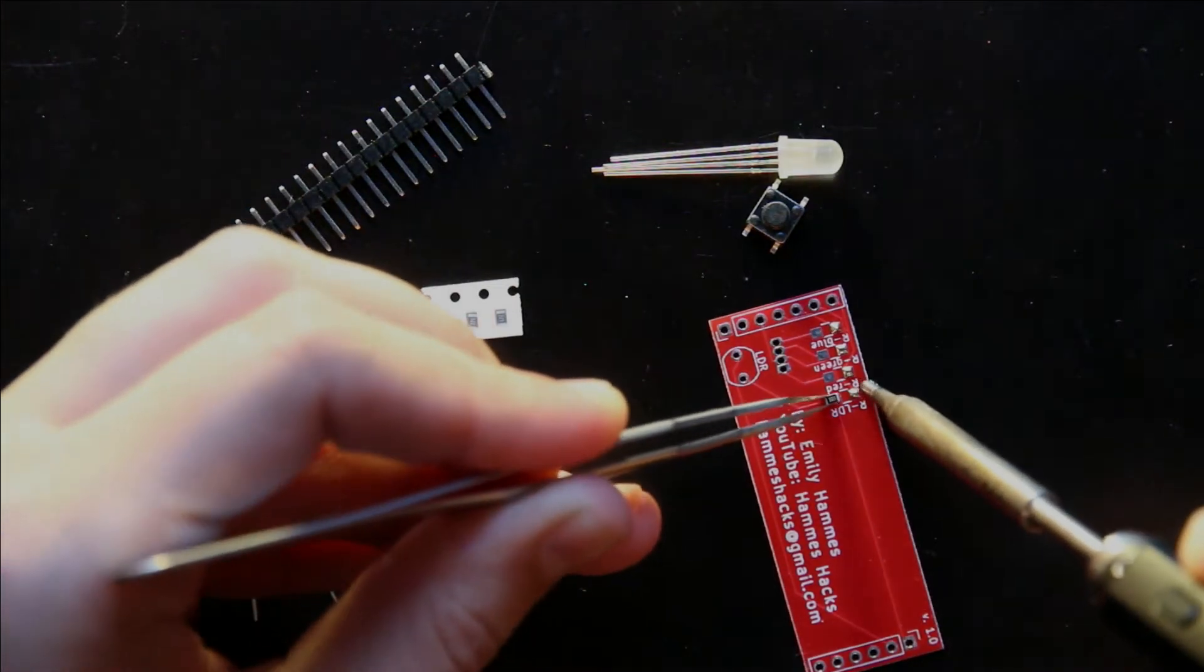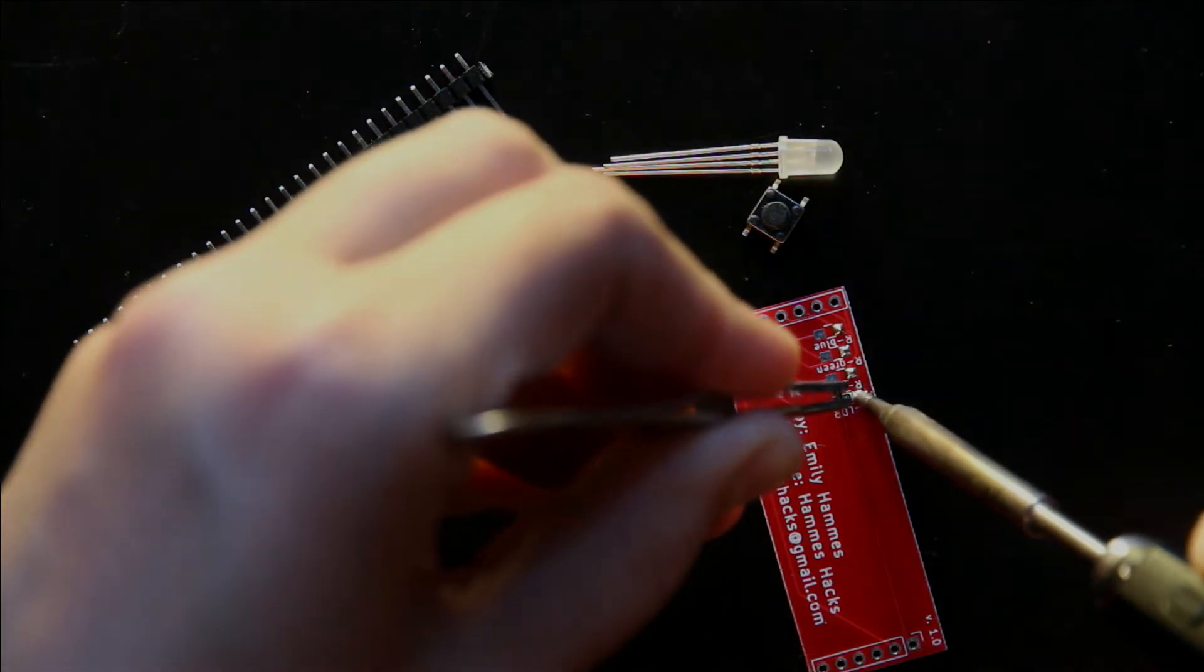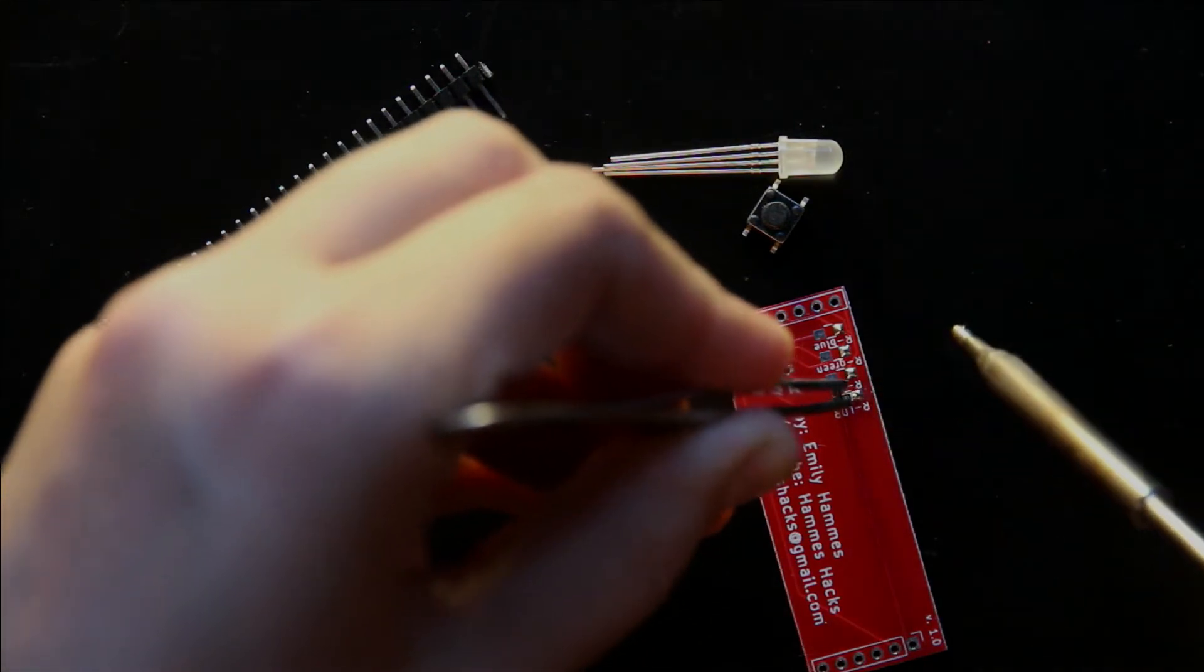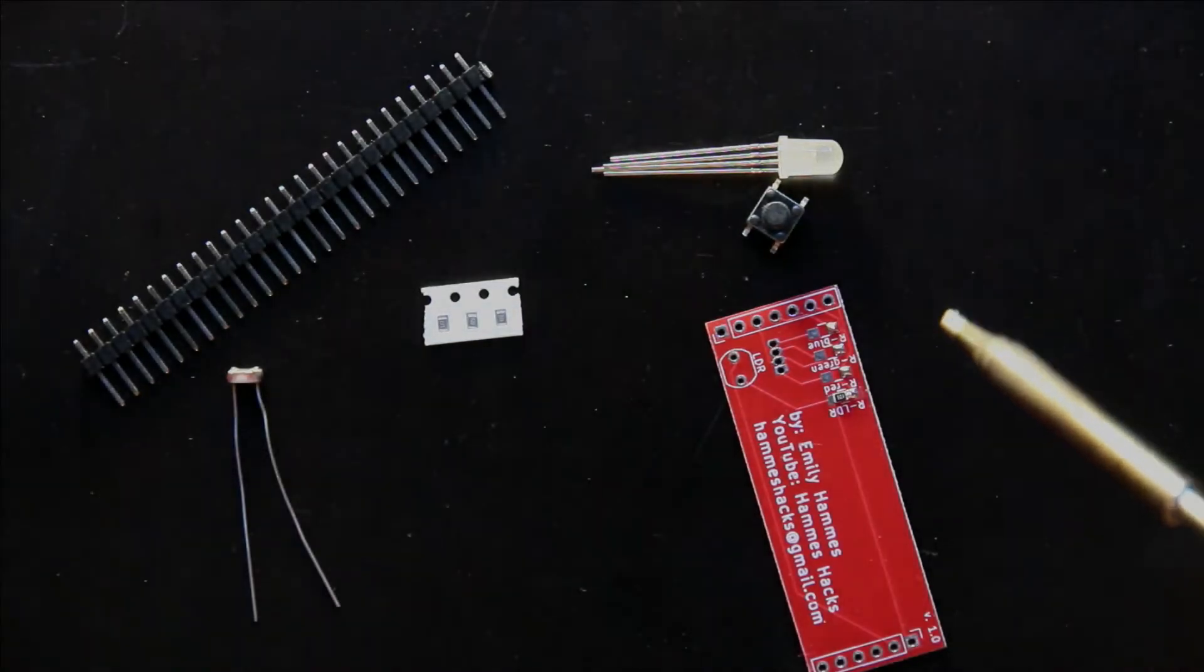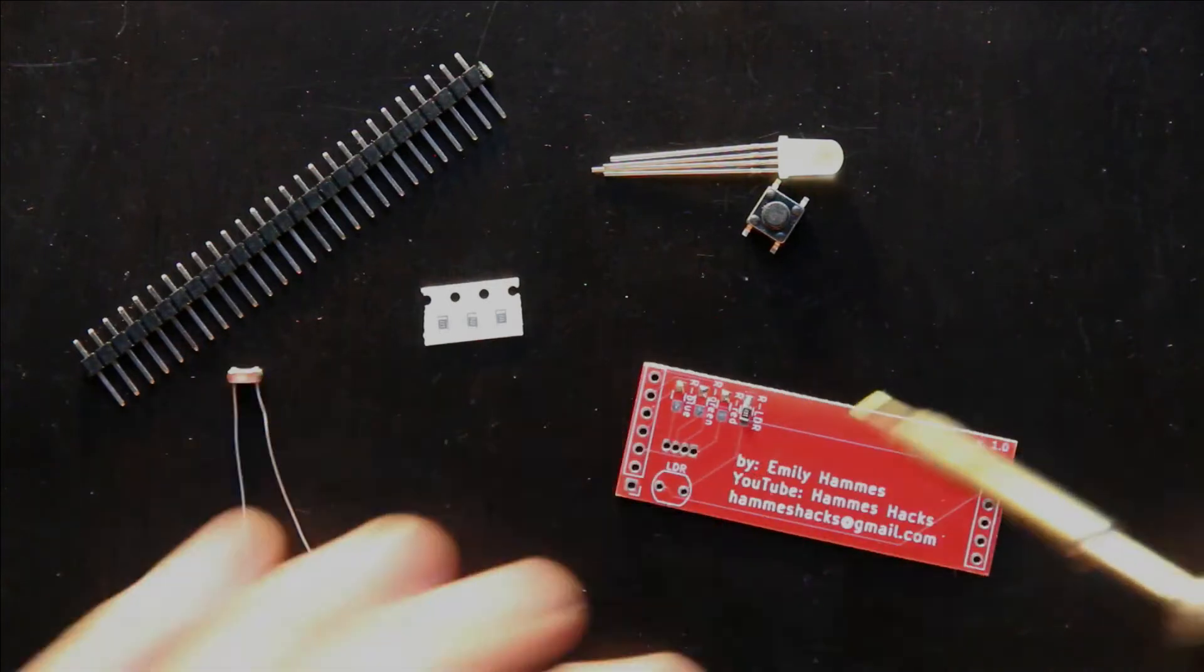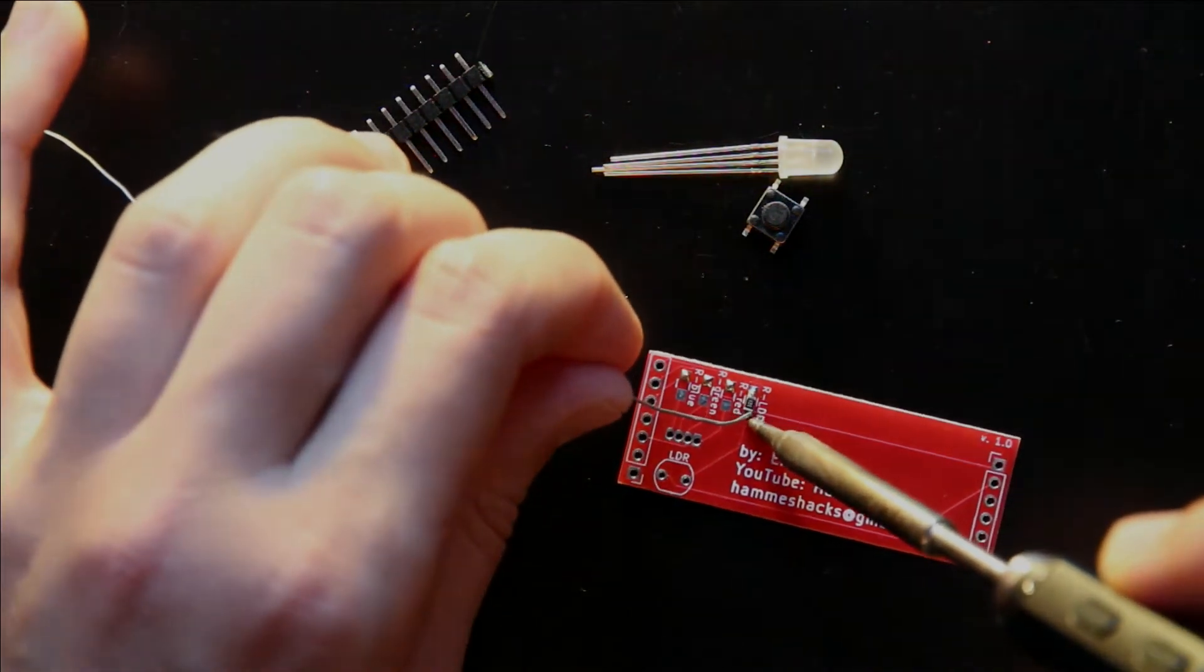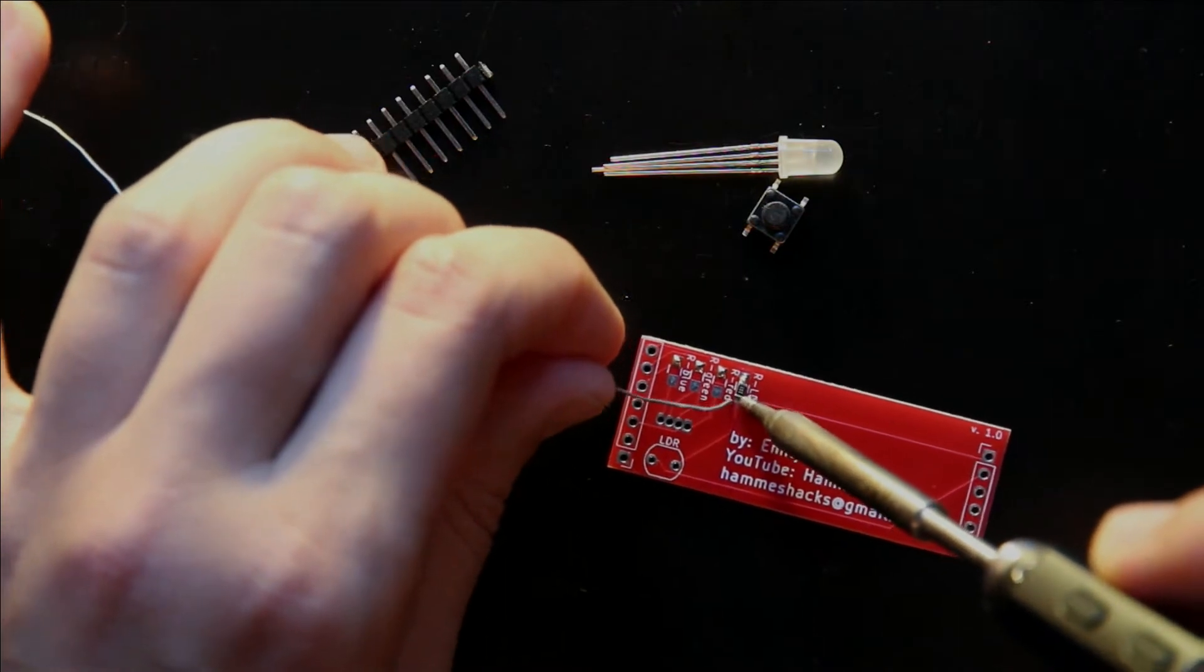And that one goes on the resistor pad labeled RLDR. And by re-melting the solder while holding the resistor in place, we can get a good contact. Then you can go ahead and solder the other side of that resistor.